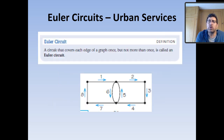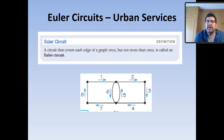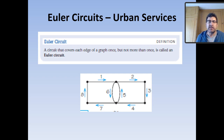Each street intersection is a vertex, and each sidewalk that contains meters or post boxes makes up an edge. We use curves to emphasize certain aspects of the graph problem. Now, what is an Euler circuit? An Euler circuit is a circuit that covers every edge once and has the same start and ending point — a circuit that covers each edge once, not more than once.